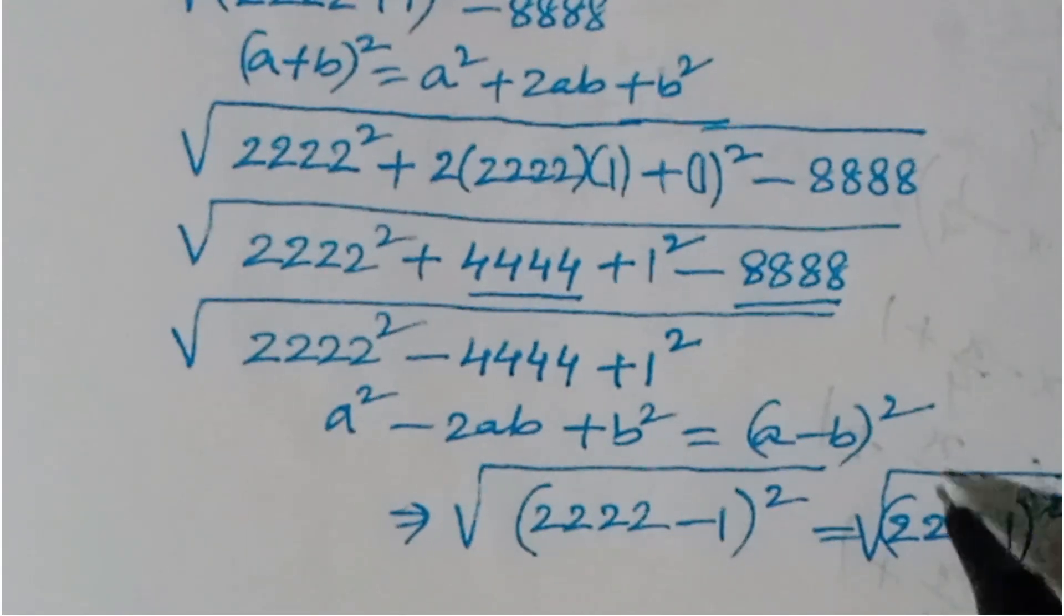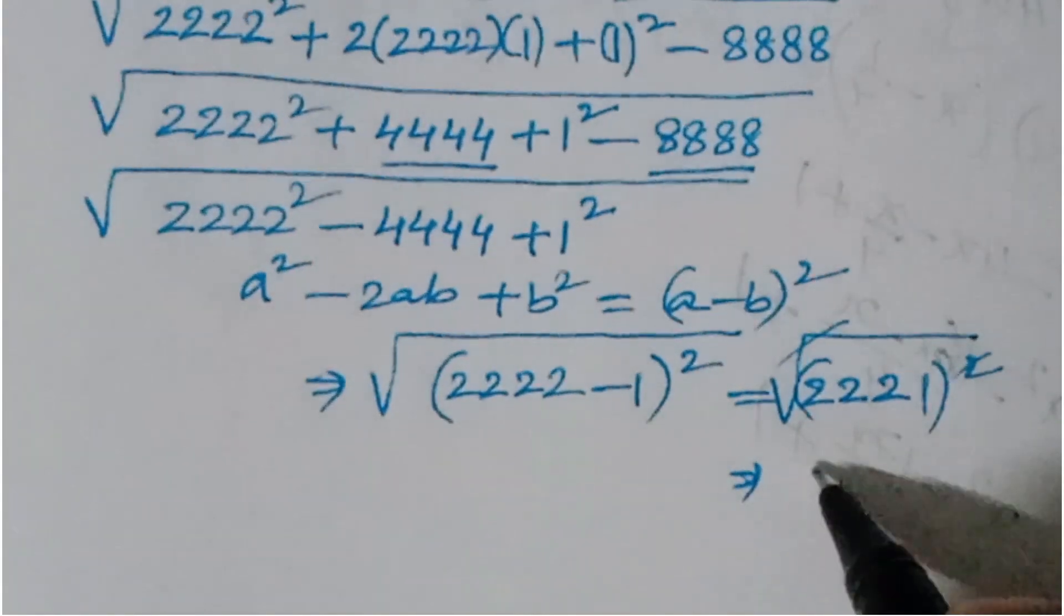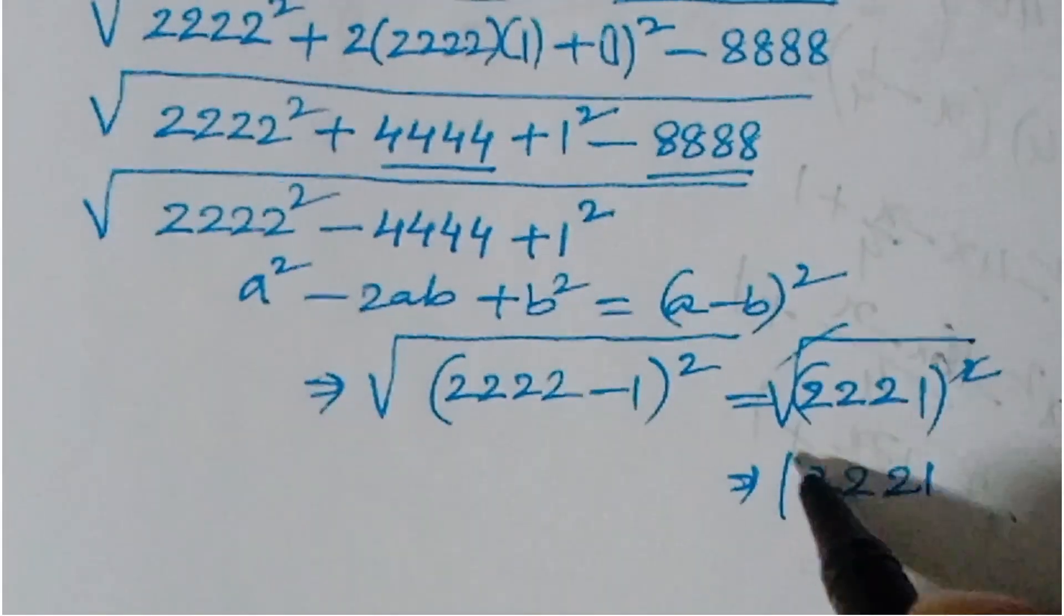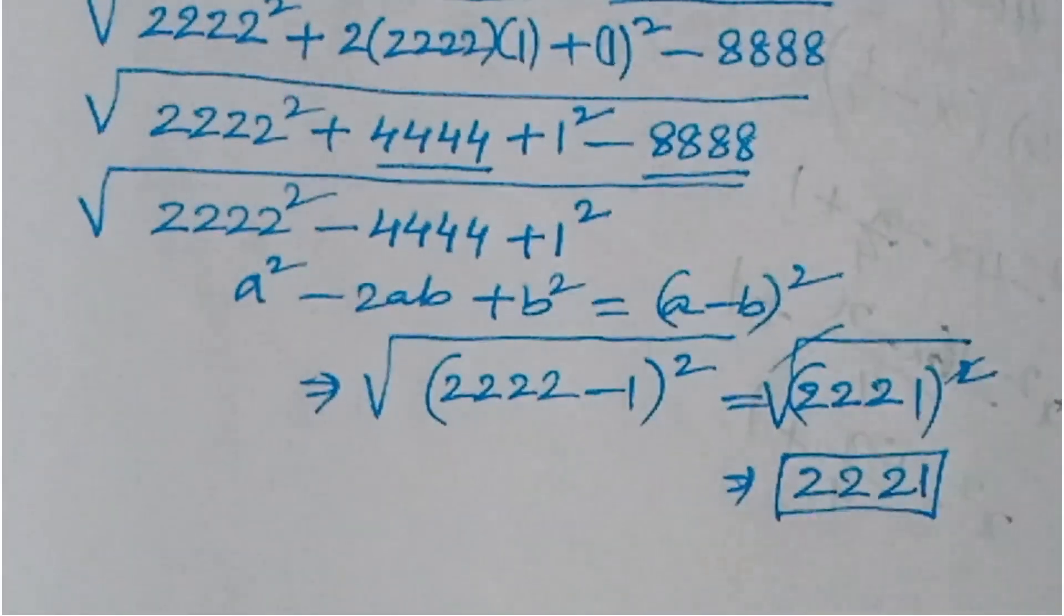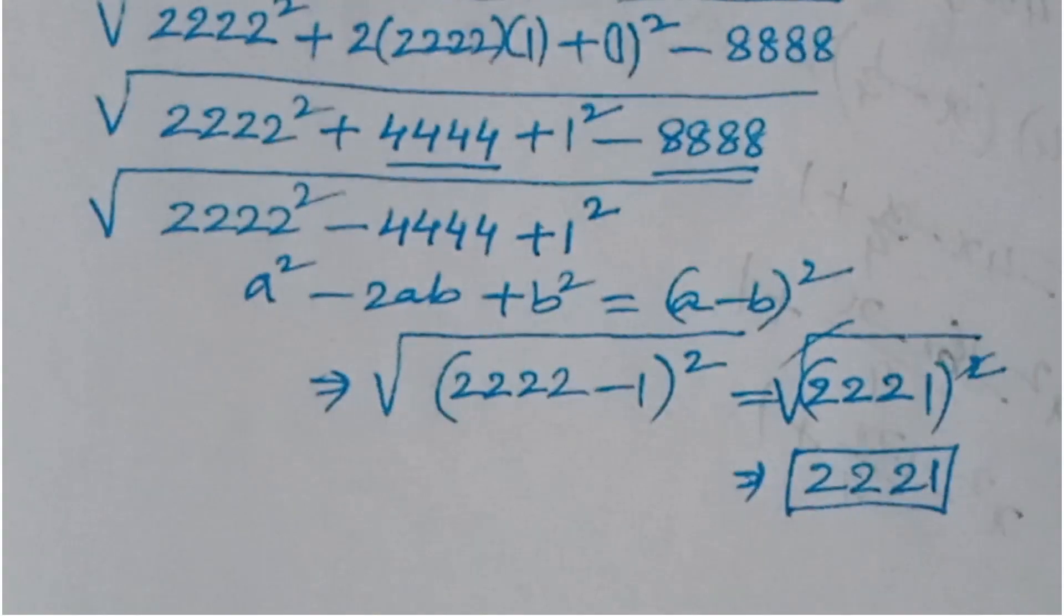So the value is 2221 whole squared. We'll get square root of 2221 whole squared. Square and root cancel, so the final value is 2221. So thank you for watching Ion CG Max. If you like the video, subscribe the channel and share the video to your friends. Thank you once again for watching Ion CG Max Olympiad.